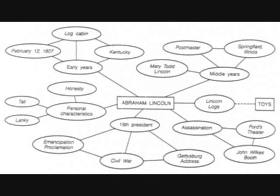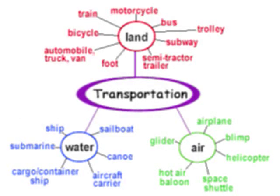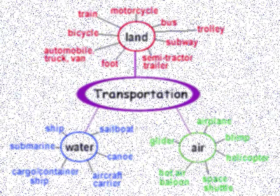Here, information about Lincoln is gathered. In this semantic map about transportation, the information has been organized by category. This also gives students a deeper understanding about the vocabulary word, how it relates to other topics, and how to organize information.